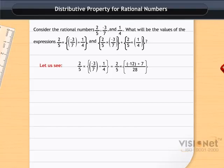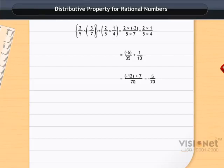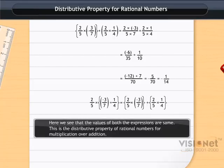Let us solve the expression as given here. What will we get? We get to know that both expressions are the same. Thus, this is the distributive property of rational numbers for multiplication over addition.